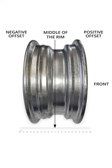An offset refers to the distance between the centre line of a wheel and the mounting surface of the hub. It is measured in millimetres and can be positive, negative or zero.